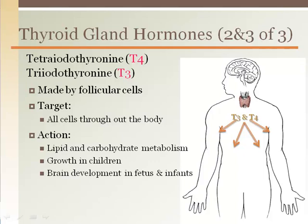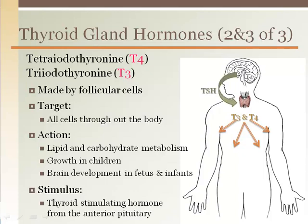In children, T3 and T4 play a role in growth and brain development. The stimulus to release these thyroid hormones comes from thyroid stimulating hormone from the anterior pituitary gland when the basal metabolic rate of the body has slowed down. This is detected by the hypothalamus, which sends out thyrotropin releasing hormone to the anterior pituitary, which in turn sends thyroid stimulating hormone to the thyroid gland to release T3 and T4.